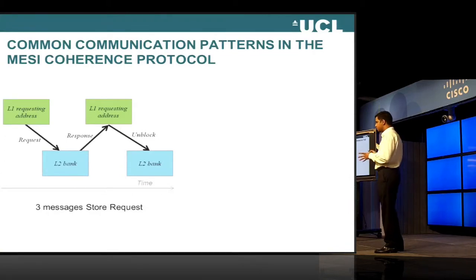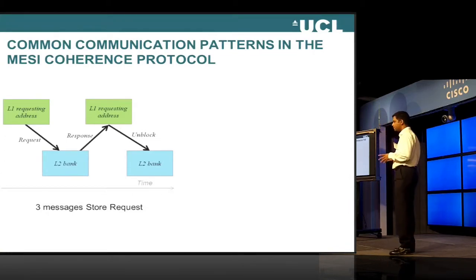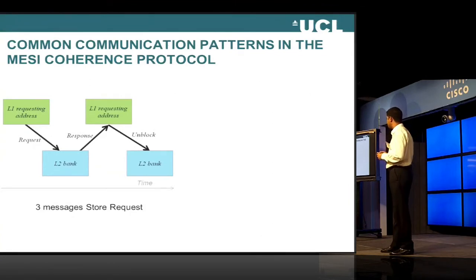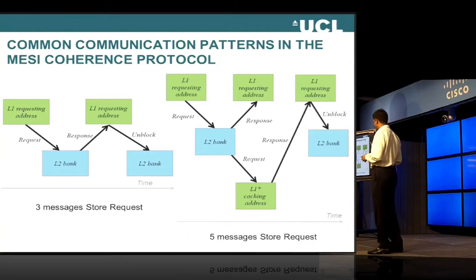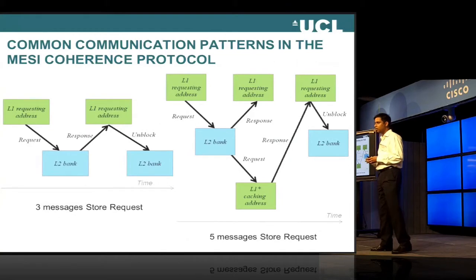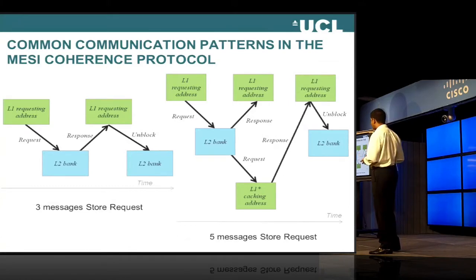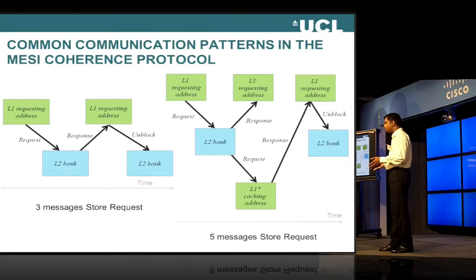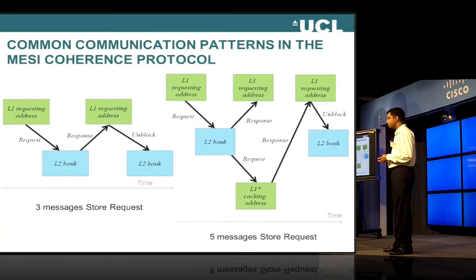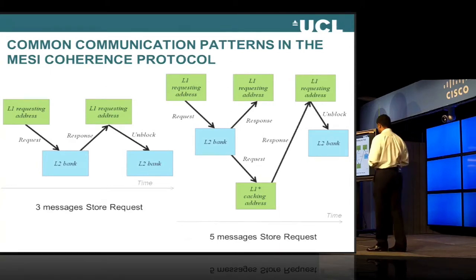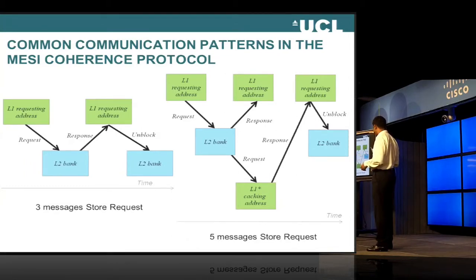The five-message store request is very similar to the three-message store request, but the only difference is that the address is not found in the L2 bank of the second core. In the three-message store request, we would actually need to open the optical circuit three times, giving us three times the overhead. Our algorithm would incur only one of these overheads and leave the optical circuit open, so that all three messages — request, response, and unblock — can pass through the circuit. Similarly, in the five-message store request, we would have only one overhead so that five messages can pass through.